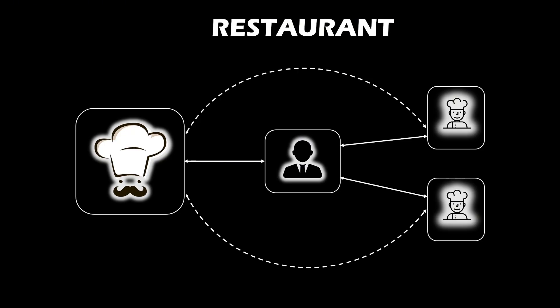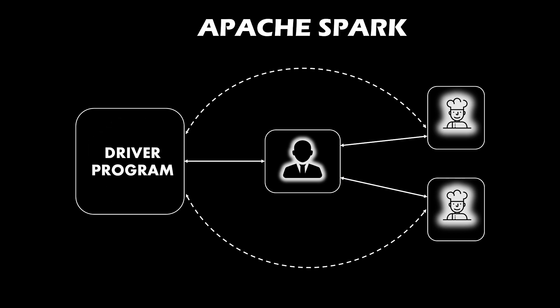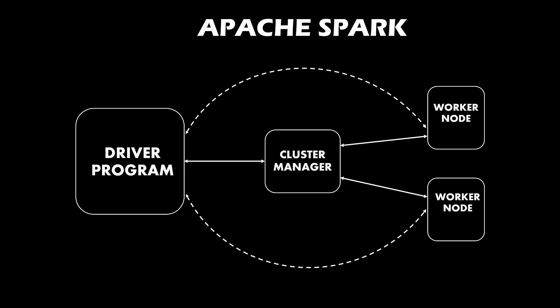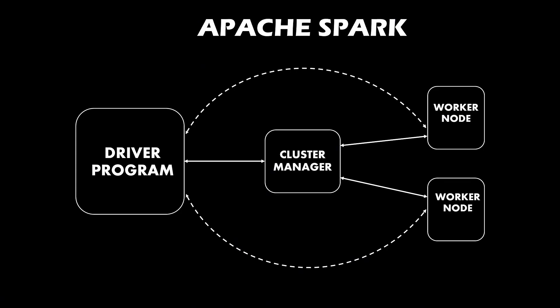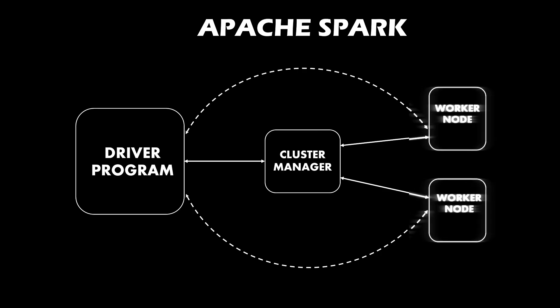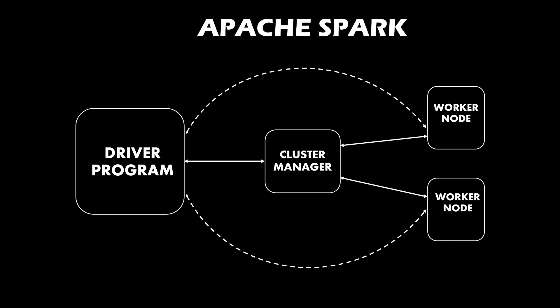Now these three roles can be exactly matched with the three main components of Apache Spark. The master chef can be replaced with a component called the Driver Program, the assistant chefs or workers can be replaced with worker nodes, and the restaurant manager can be replaced with the cluster manager. The Driver Program is considered the master of the Spark architecture. When you process any data using Apache Spark, the Driver Program is the first to initialize the process and, based on your code, it understands what needs to be done, plans it, divides the work into multiple tasks, and assigns them to the worker nodes. The worker nodes actually execute the tasks, and the compute and memory they need are assigned by the cluster manager.